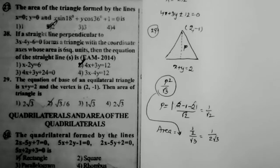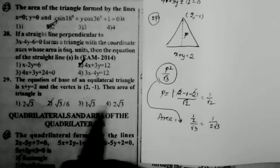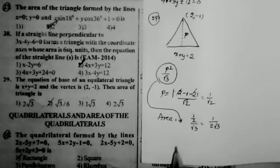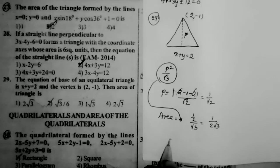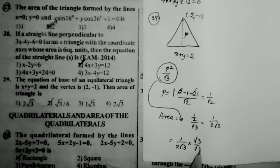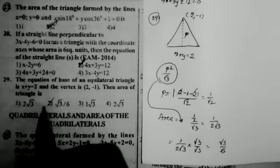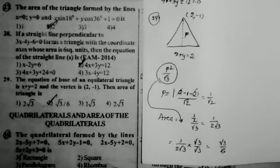Rationalizing: 1 / (2√3) × (√3/√3) = √3/6. So the answer is √3/6, which is the second option.